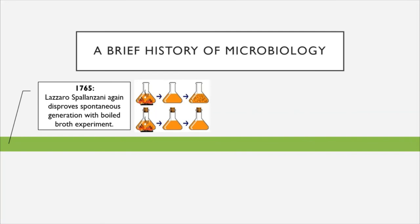In 1765, Lazaro Spallanzani again disproved spontaneous generation with a different experiment. He took two sets of flasks containing nutrient broth, boiled both to kill all microscopic organisms inside, then capped one and left the other open. After a time, the open flask became contaminated with microscopic organisms, whereas the capped one did not. This was further proof that microbial growth cannot arise spontaneously on its own — it has to come from somewhere.